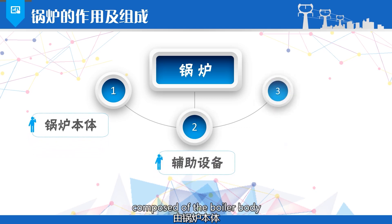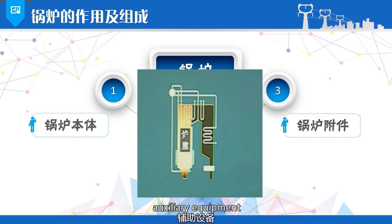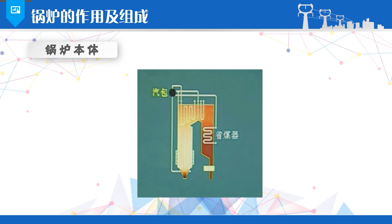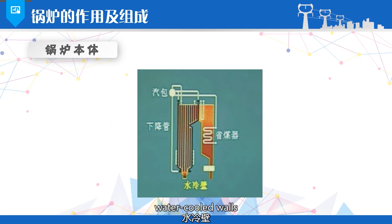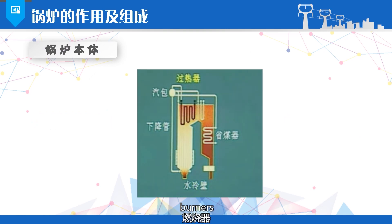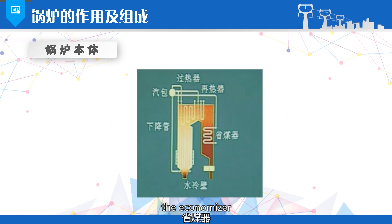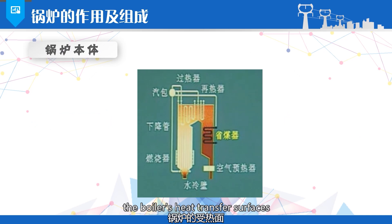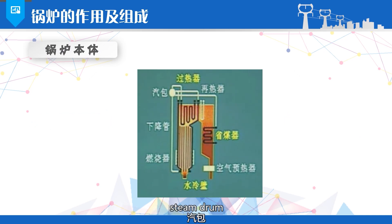Boilers are generally composed of the boiler body, auxiliary equipment, and boiler accessories. The boiler body is the main component of the boiler. It consists of the furnace, fluid ducts, economizer, steam drum, downcomer tubes, water-cooled walls, superheater, reheater, burners, and air preheater, among others. Among these, the economizer, water-cooled walls, superheater, reheater, and air preheater are referred to as the boiler's heat transfer surfaces.